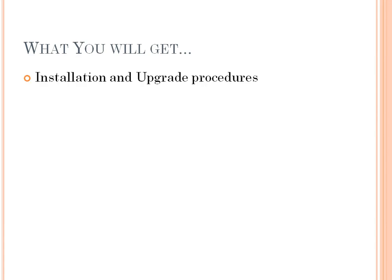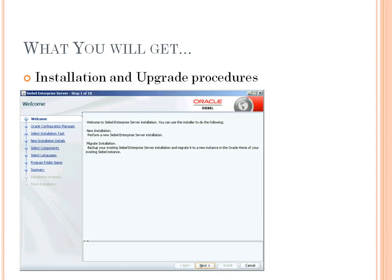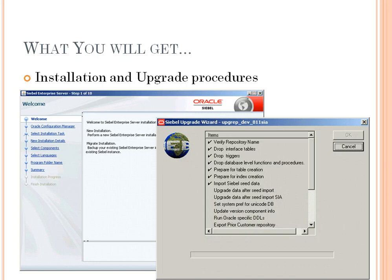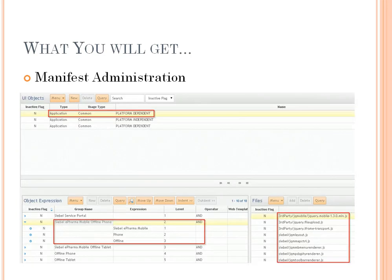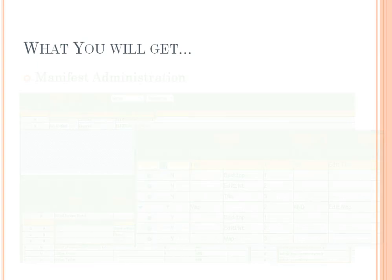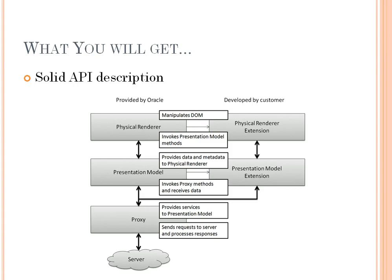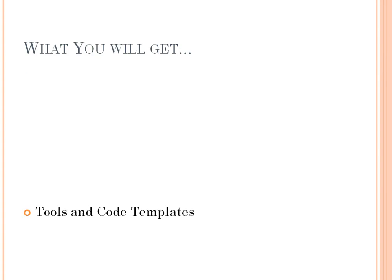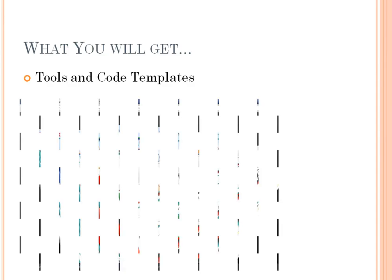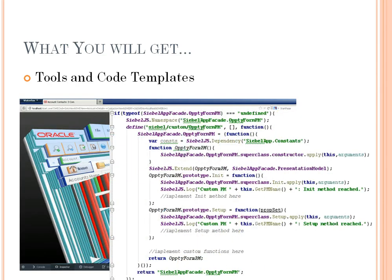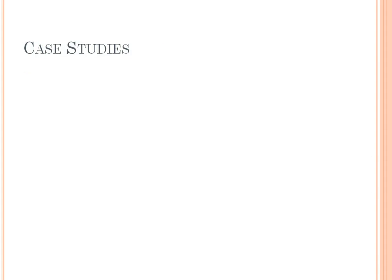We covered the whole installation and upgrade procedures so you know how to get ready for IP 2014. The book covers the manifest administration and we provide a solid description of the API. The book also comes with a lot of tool descriptions and code templates, available as download.